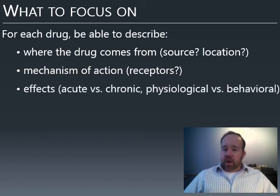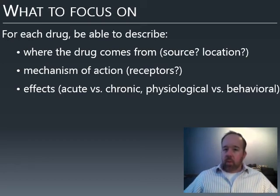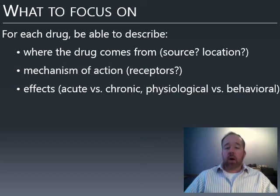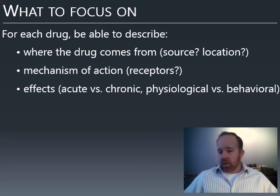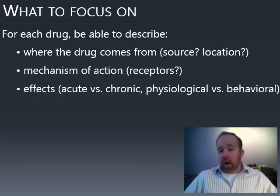Understanding the effects: once the brain and body are affected by the drug, what happens? We have acute (short-term) and chronic (long-term) effects, as well as physiological and behavioral effects. Physiological effects are those that happen to the body; behavioral effects are changes in behavior. You can mix these: acute physiological, acute behavioral, chronic physiological, and chronic behavioral effects.